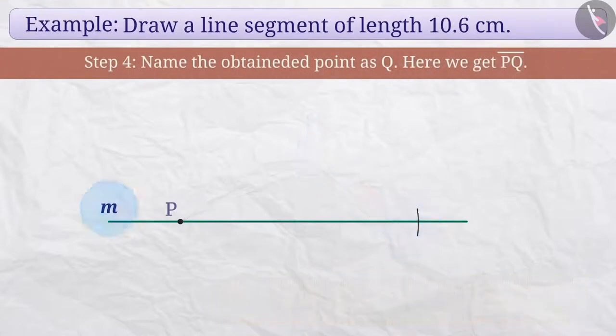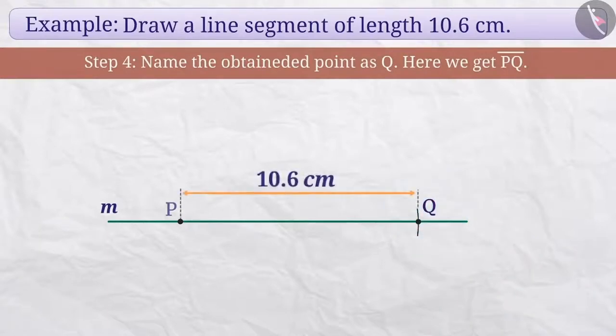Step 4: The point at which the arc intersects the line M will be named point Q. Here we have obtained a line segment PQ of length 10.6 cm.